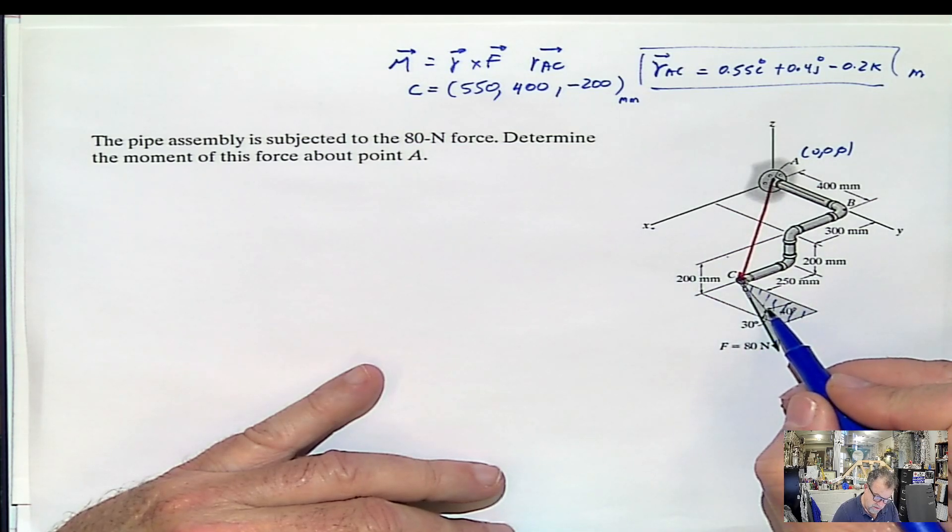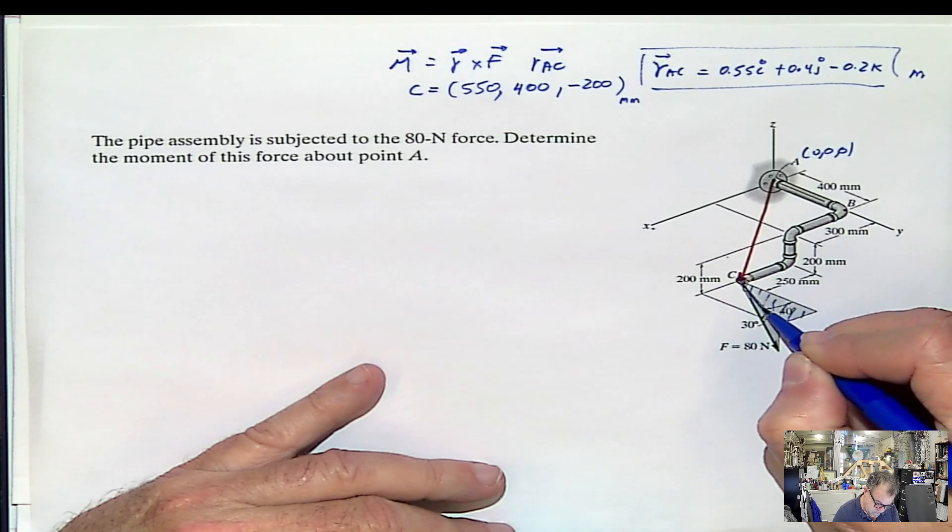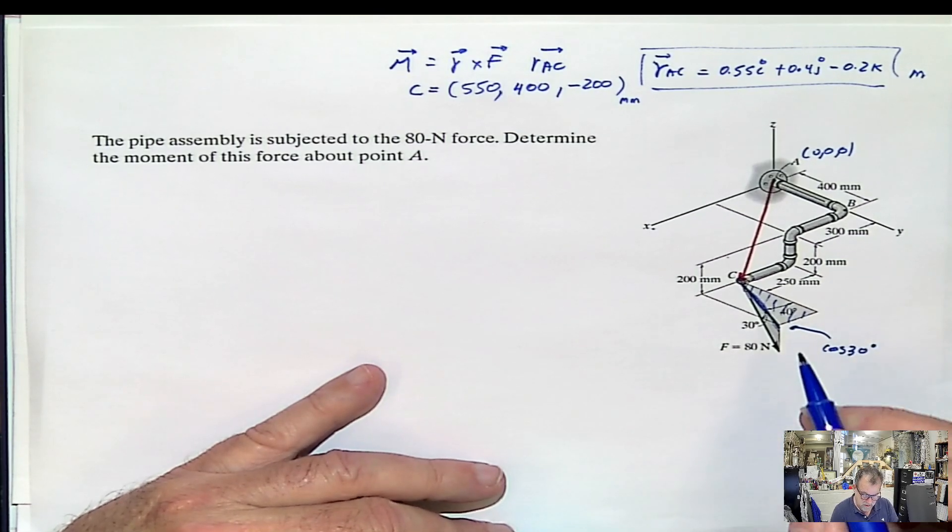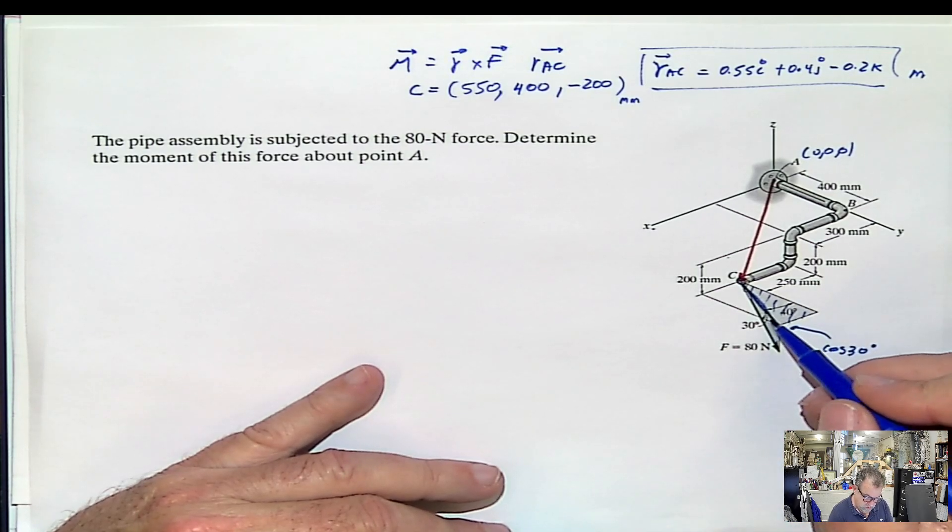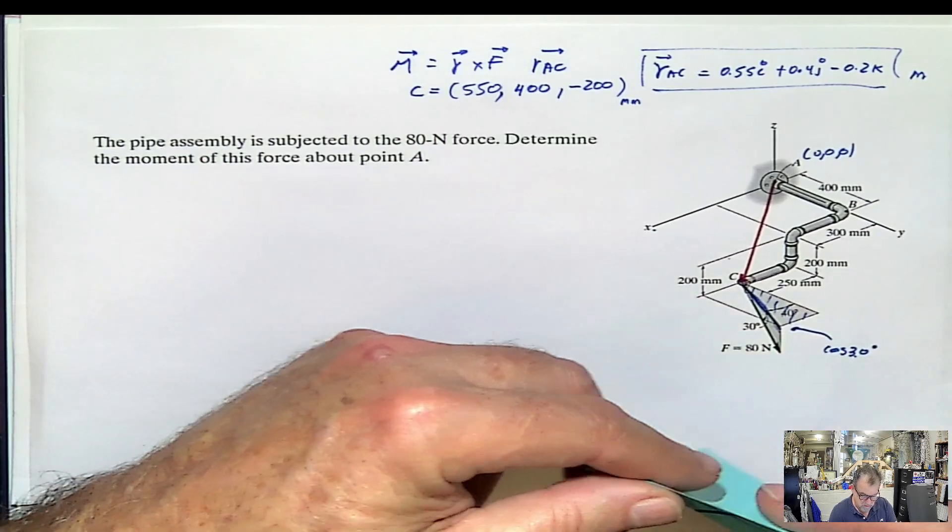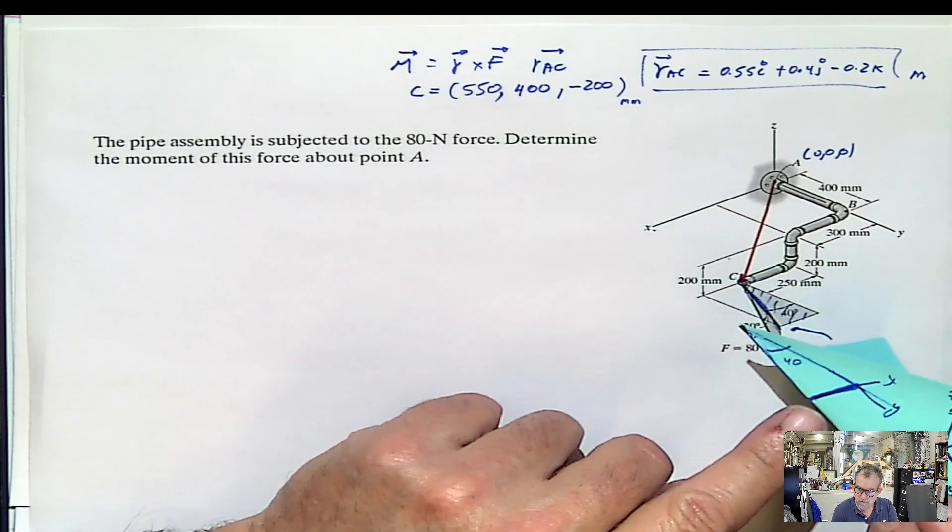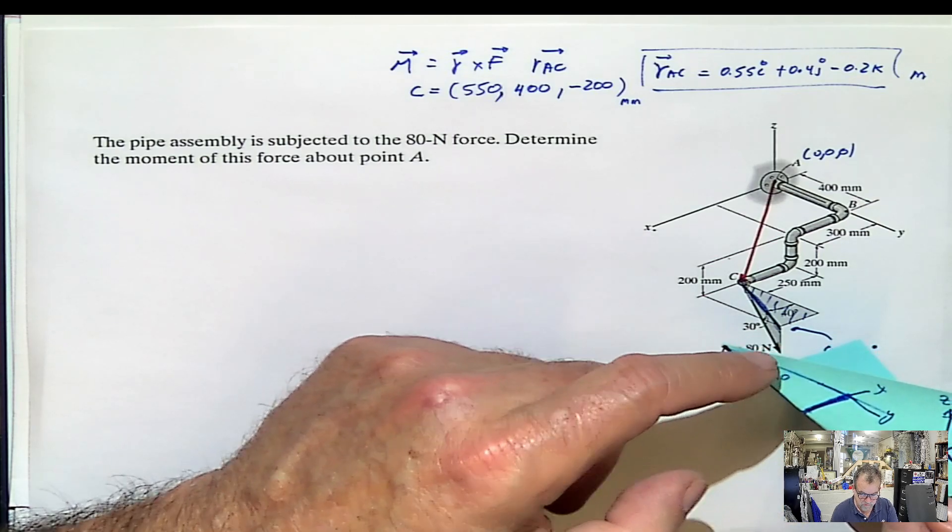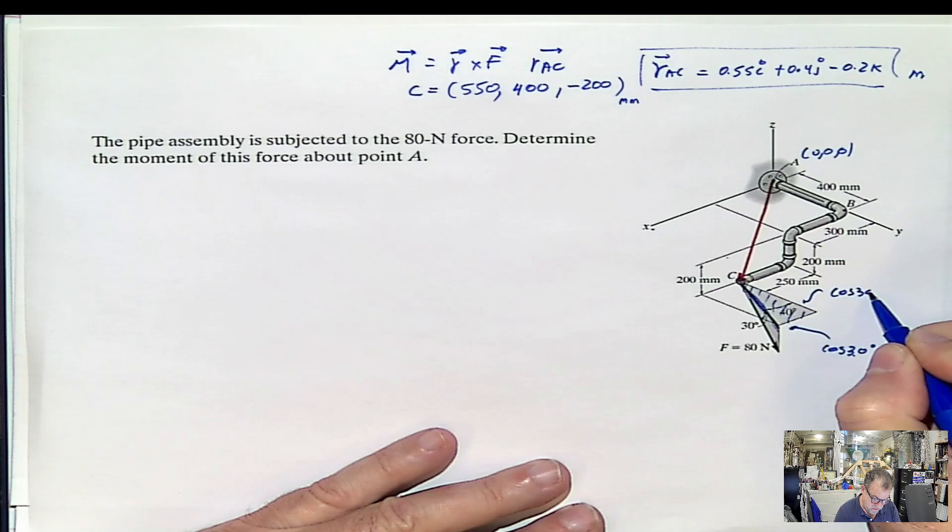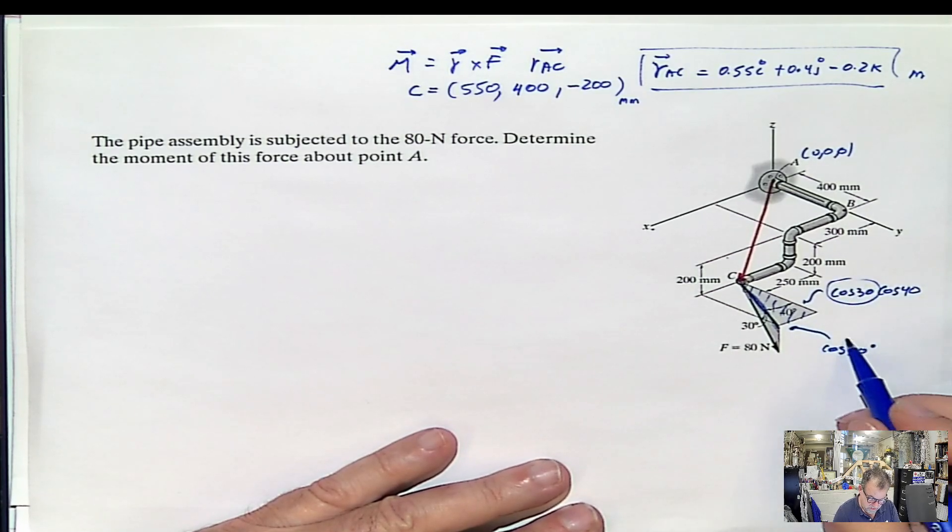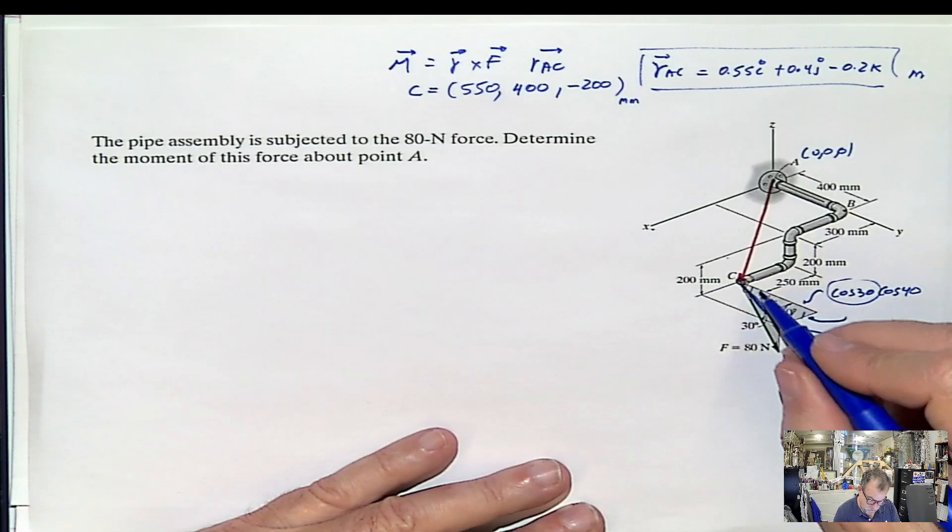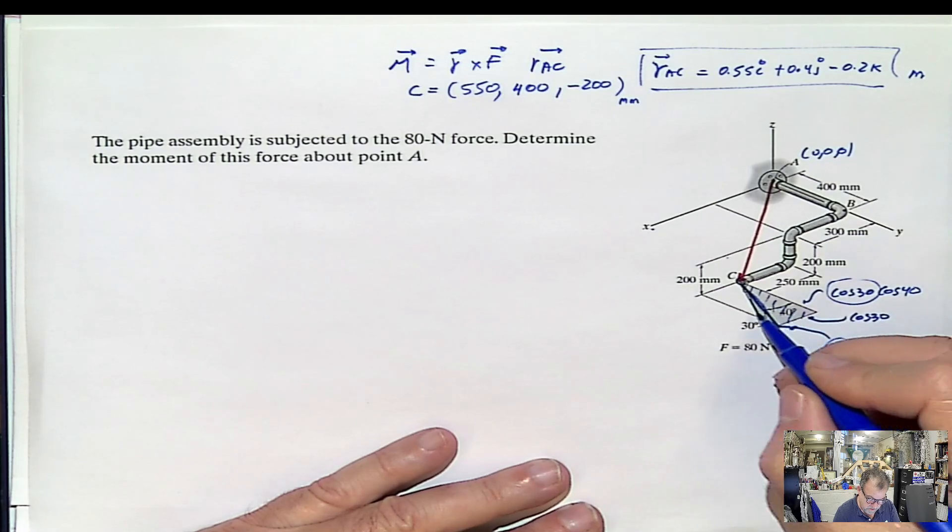That will be cosine 30 degrees. That line will be cosine 30 degrees. And now, once I project this line over the y-axis, I have to multiply again by 40 degrees. So I have to multiply that line, which is this value here. Now I multiply by cosine 40, and I will get that value over there. So this is cosine 30 cosine 40. Remember, cosine 30 is this.